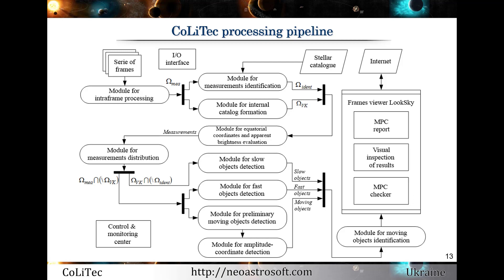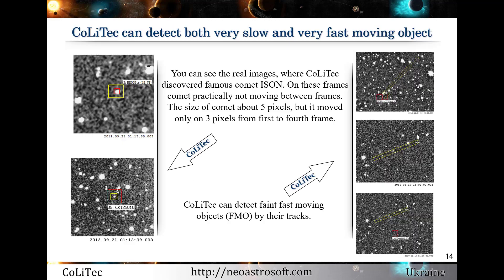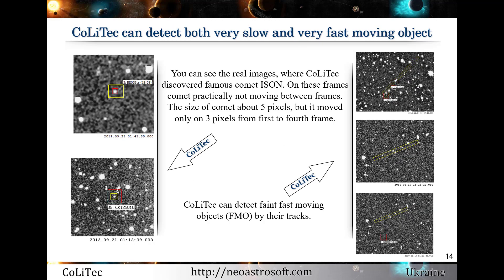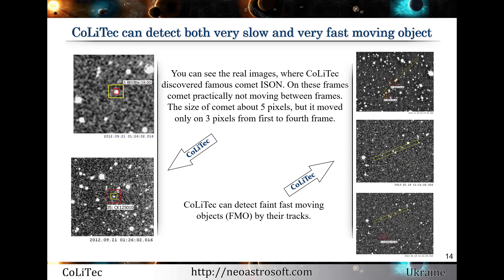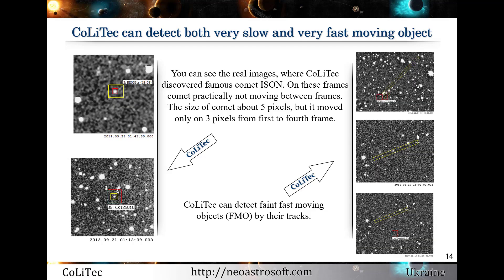On this slide, you can see the processing pipeline of the Kalytec software. After intra-frame processing, the classification of measurements is performed. The different classes contain measurements of objects with null, near-zero, normal, and very fast apparent motion. Processing of these sets of objects is performed in parallel, which reduces execution time. Kalytec has abilities for detecting very slow and very fast objects — the range of visible velocities is from 0.7 to 40 pixels per frame.